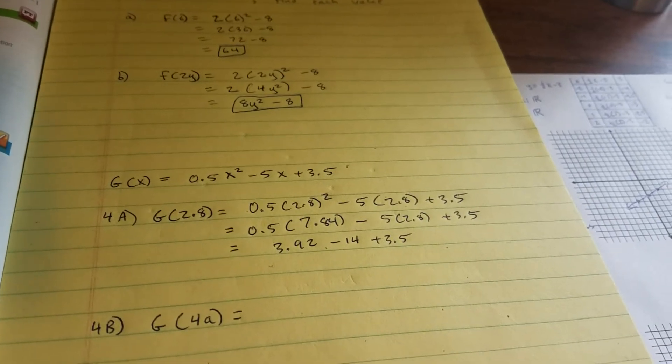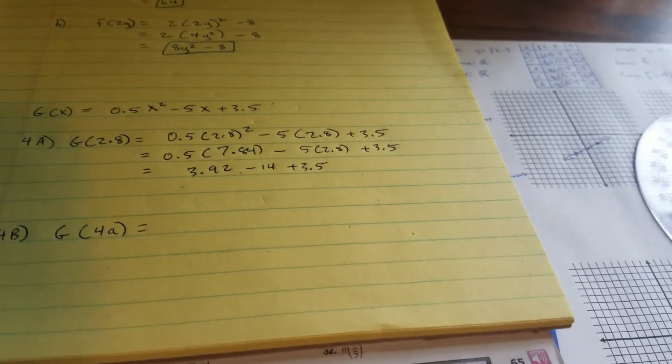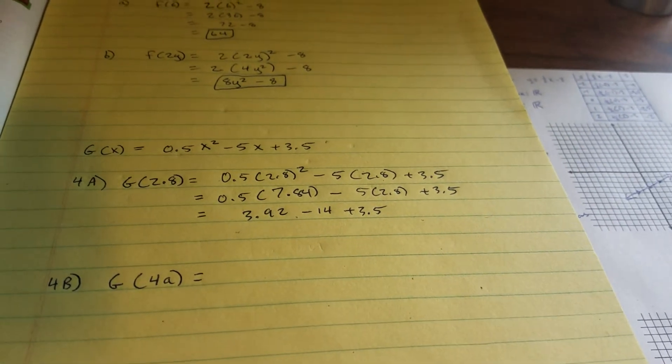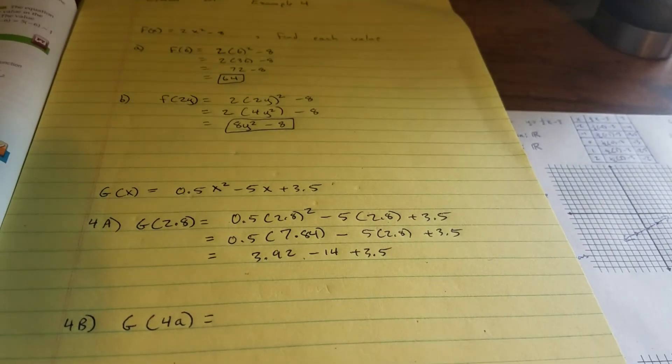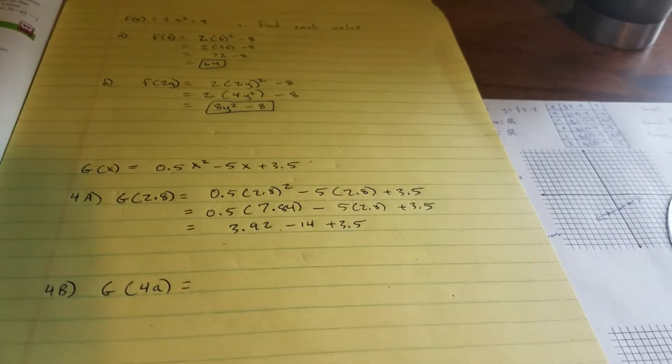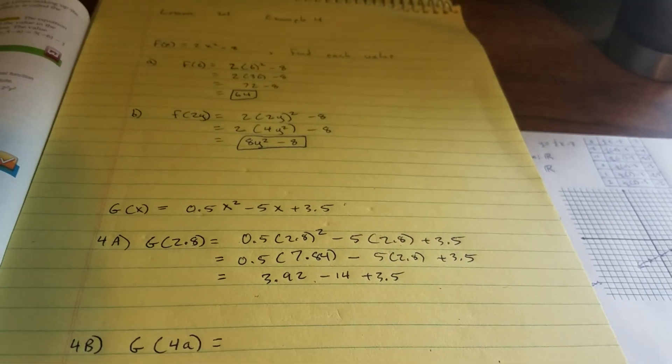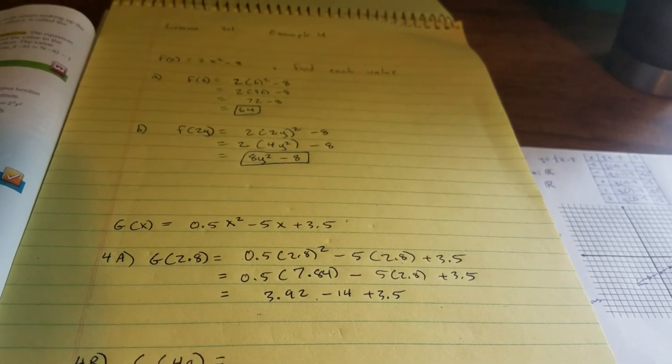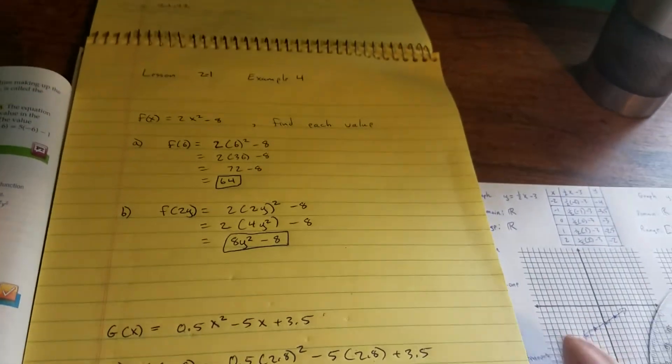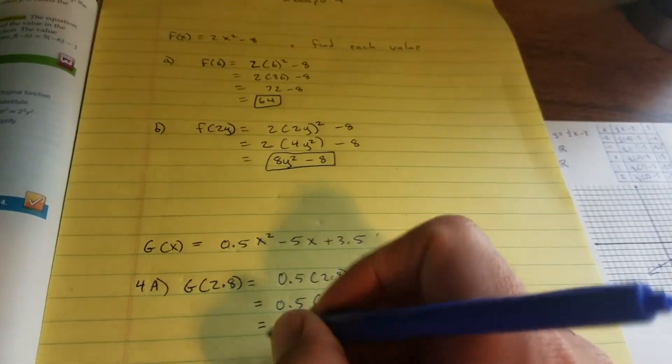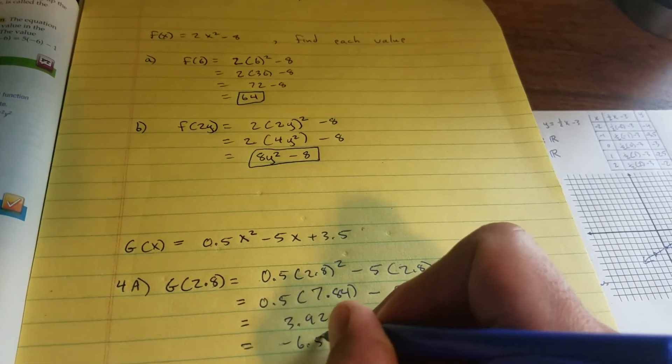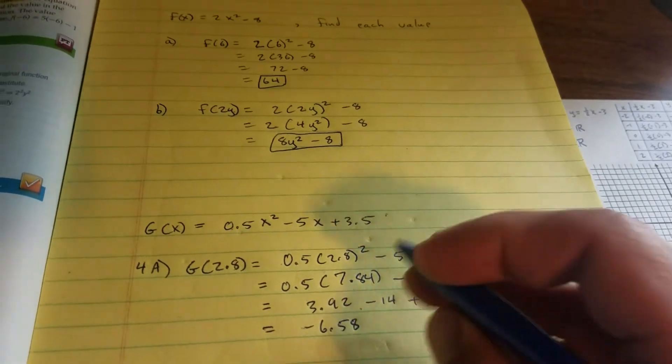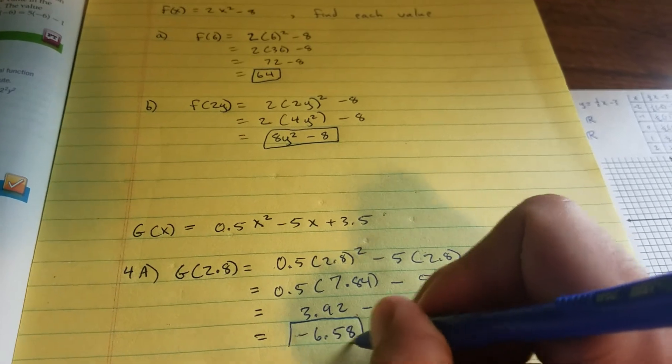Put that in calculator. 3.92 minus 14 plus 3.5. I get negative 6.58, and then I'll box my answer.